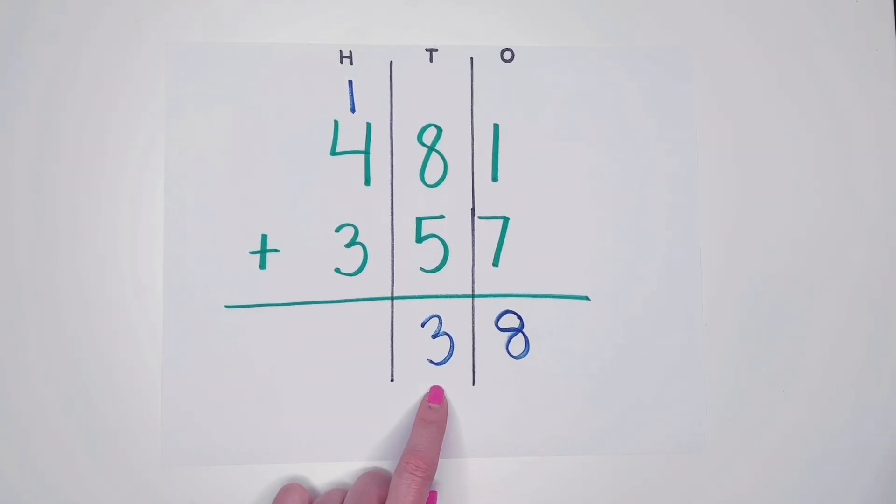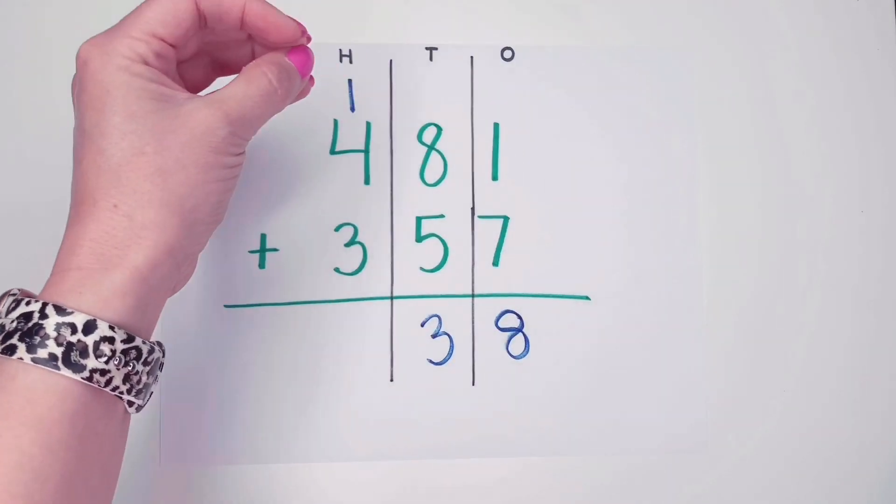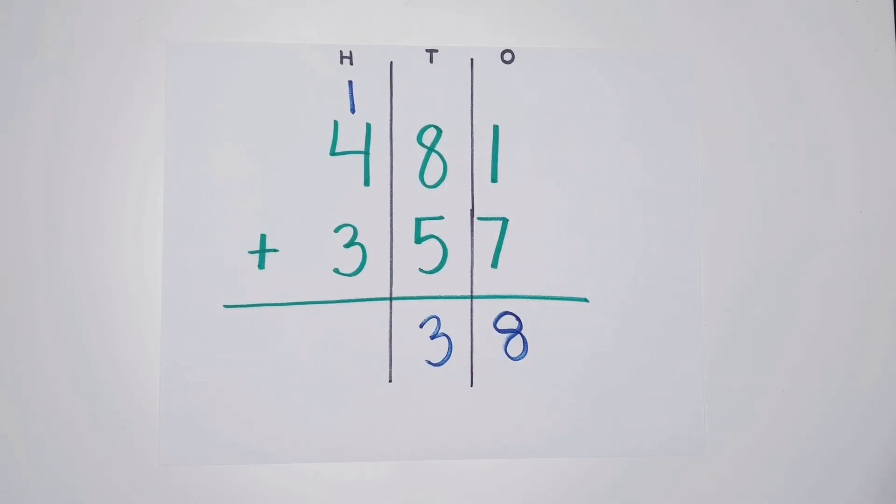So what we're going to have to do is take ten of those tens and give them to our hundreds. Because ten tens equals one hundred. And then we have three tens left.